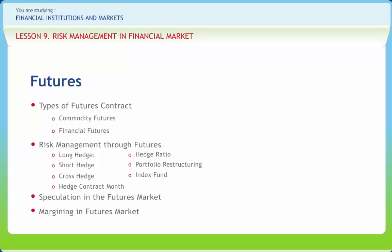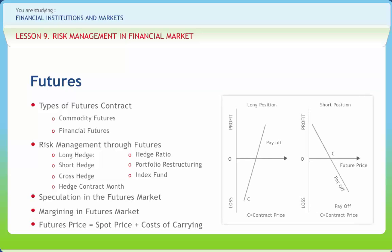Selling a future — agreeing to make delivery of a commodity — is said to be going short. This protects against a fall in price in the spot market. The spot price is the current price of a commodity, and the futures price equals the spot price plus costs of carrying.